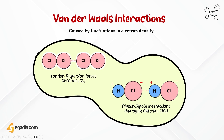Dipole-dipole interactions arise because of electric polarization in particles. They are similar to London dispersion forces but occur in molecules that have a permanent dipole. The negative end of a polar molecule attracts the positive end of another polar molecule — this attraction is known as dipole-dipole force. Hydrogen bonding is also a part of dipole-dipole forces. Examples include water and hydrogen chloride (HCl).